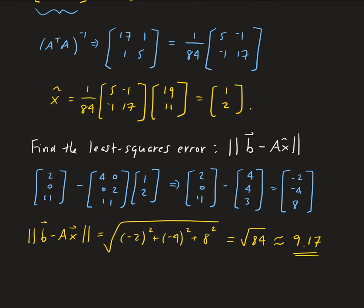So that is the least squares error — that's the minimum, the smallest error we can get because of the orthogonal decomposition theorem.